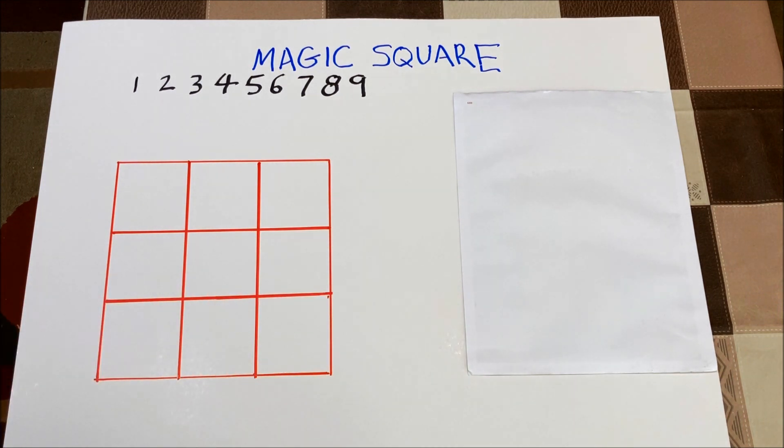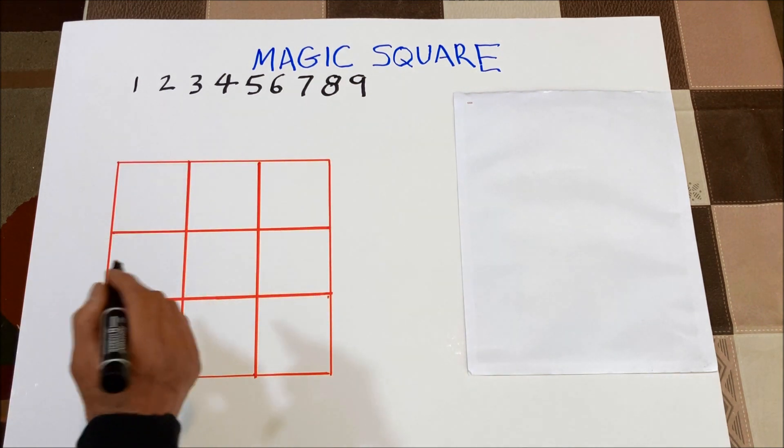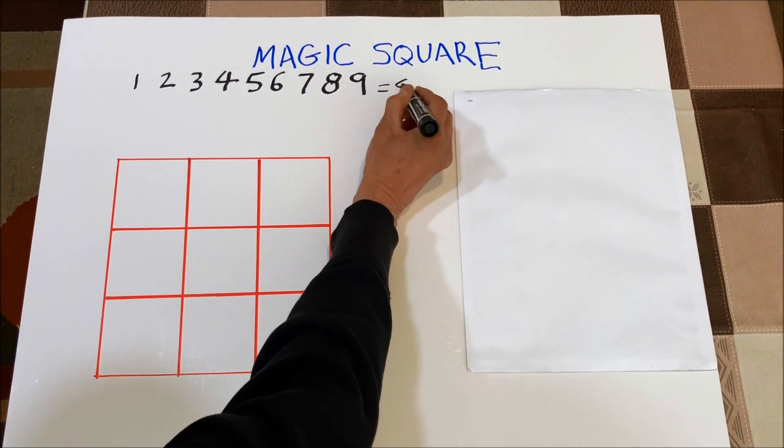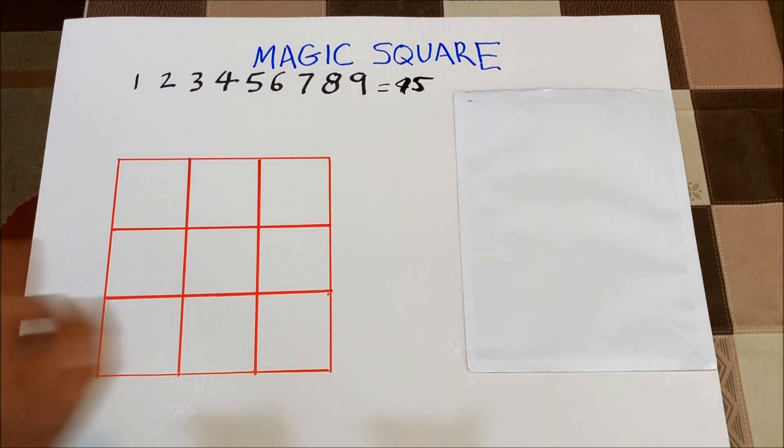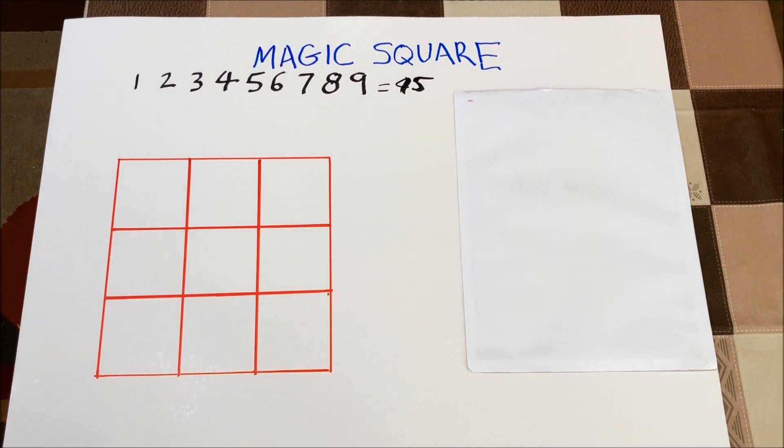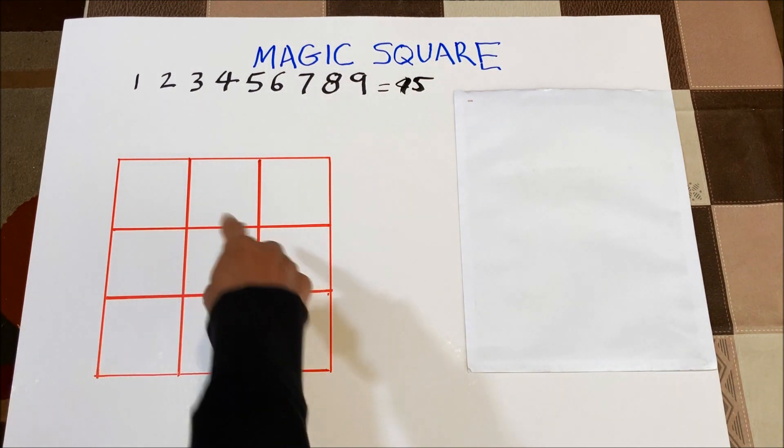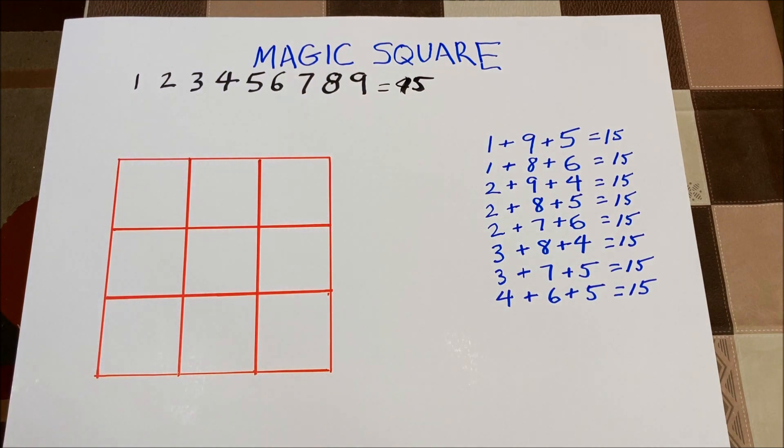Now that same number is 15 because if you add these numbers together it equals 45. 45 divided by 9 is 5, so the average number of each square is 5. There are eight equations that form that square and there they are.